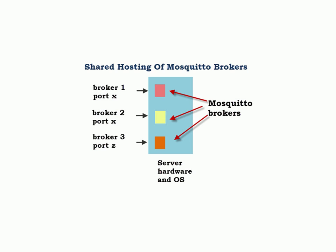However, before we look at the different hosting plans, all the hosting plans are shared plans. What that means is that you have a single bit of server hardware running multiple Mosquitto brokers, and these Mosquitto brokers are all running on different ports. So broker 1 is on port X, broker 2 is on port Y, and broker 3 is on port Z — we'll see that when we configure the brokers themselves.